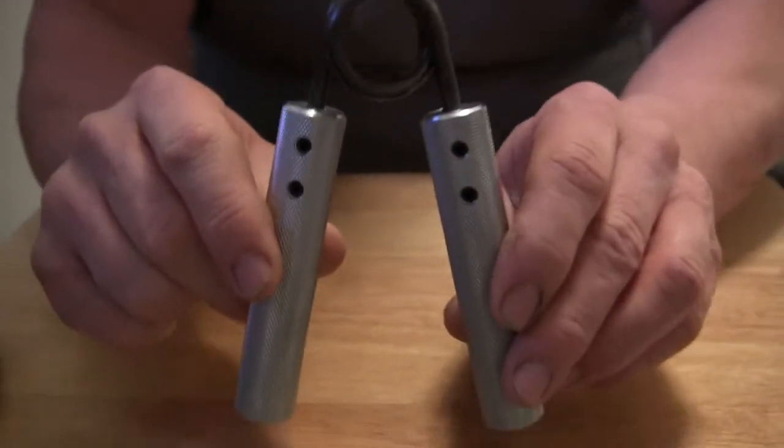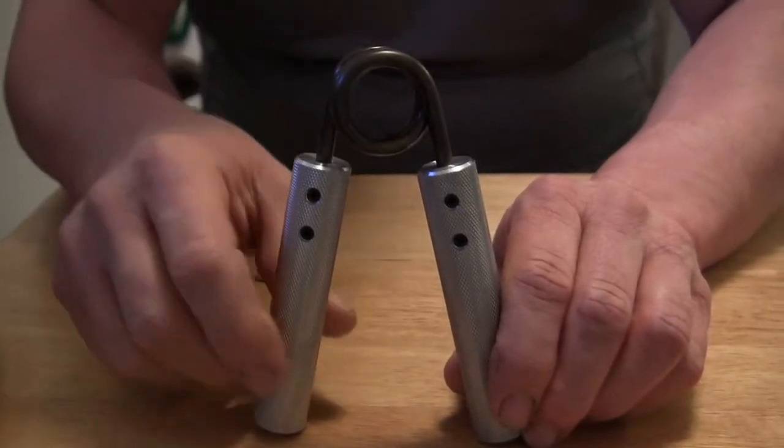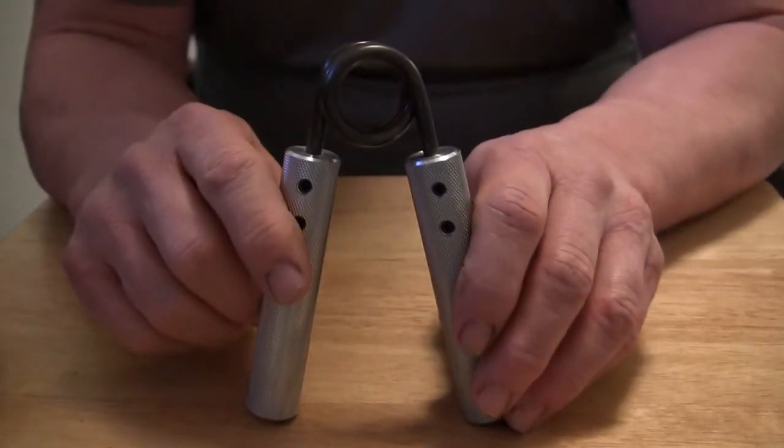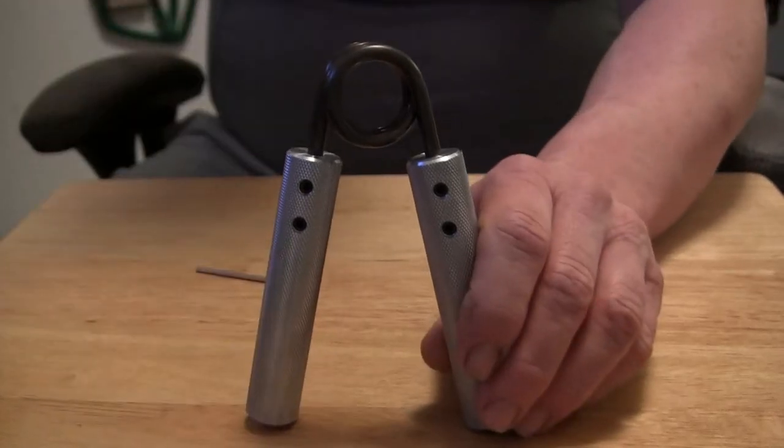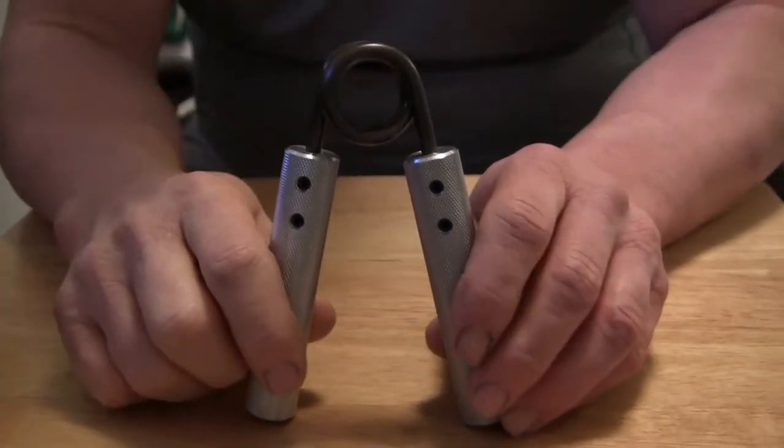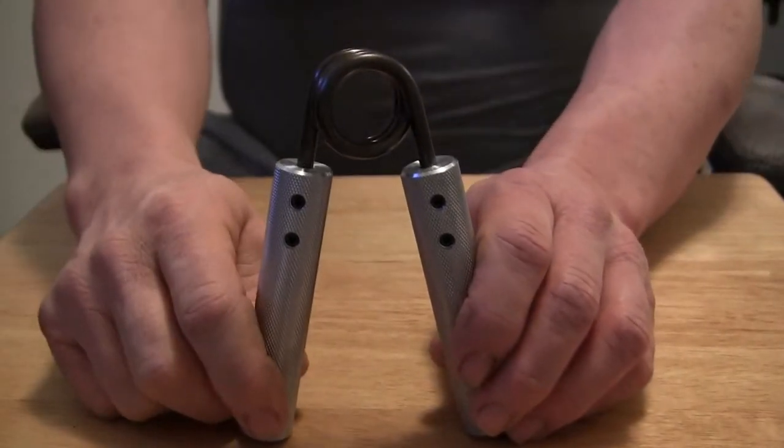And instead of trying to pronounce these names of dinosaurs, which a few of them I can, like the T-Rex and the Megalodon, I'm just going to call them Level 1, 2, 3, 4, 5, and 6, and tell you the wire size diameters and compare them to the setting depths to GHPs and Captains of Crush.